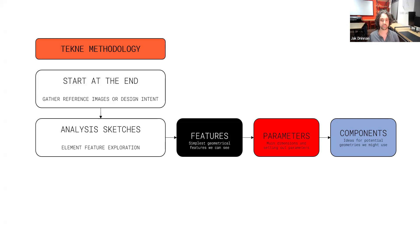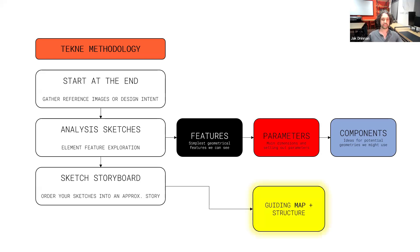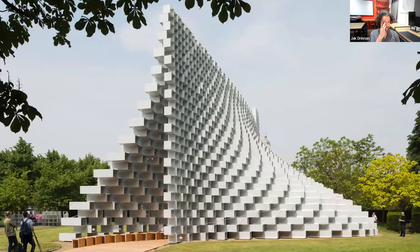These are sequential: as you get better as a parametric designer, thinking about which components you'll use comes last; which parameters will be adjustable comes a bit later; but features we can start understanding straight away. All of these sketches are then put together into a storyboard — we order our sketches into an approximate story, and this becomes our guiding map to help us script.